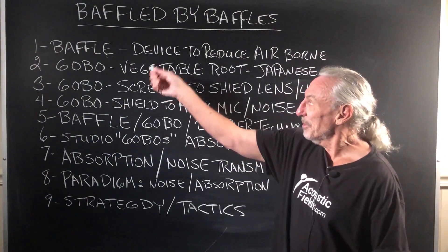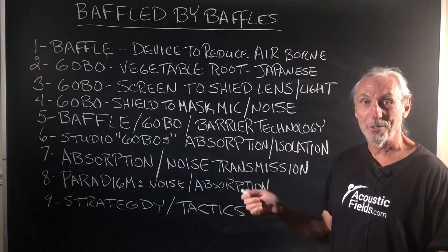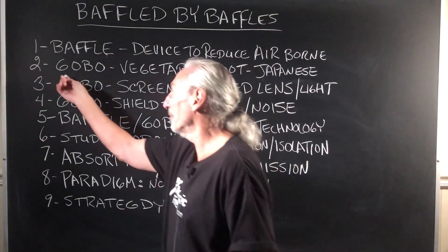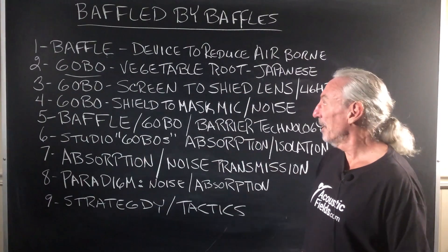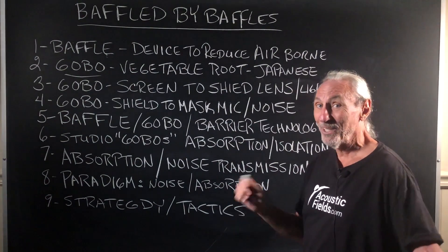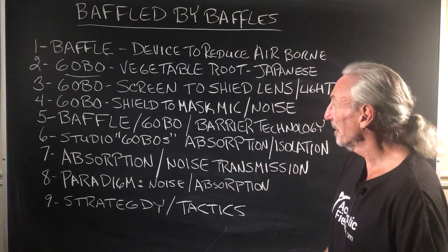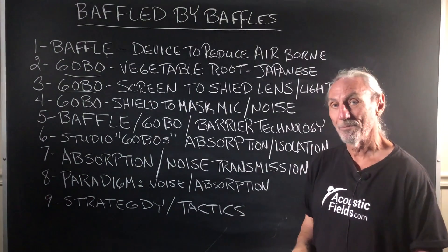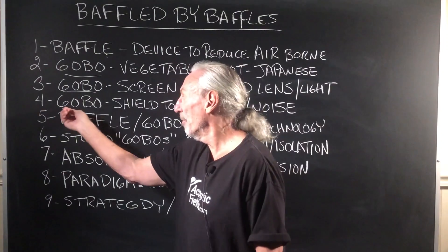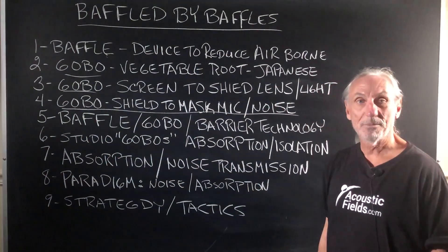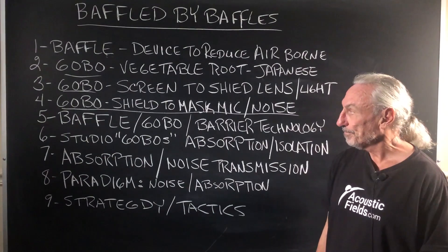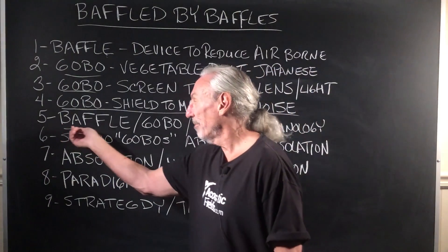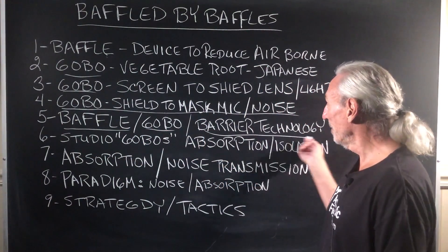So, definition: a baffle is a device to reduce airborne noise transmission — that's the definition in Wikipedia. Another term we hear is gobo. What is that? Well, it's a vegetable root used in Japanese and Hawaiian cooking, so that's not applying to our situation. Here's another definition: it's a screen to shield the lens from light, so that's in the optics world. Here's another definition more closely related: a shield to mask microphone noise. But that's not really how it's used in a recording studio. Mainly when we see the term baffle or gobo, it's barrier technology.